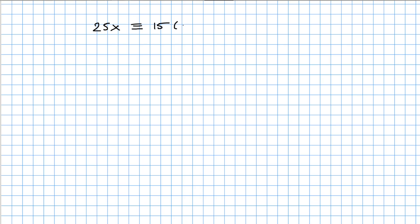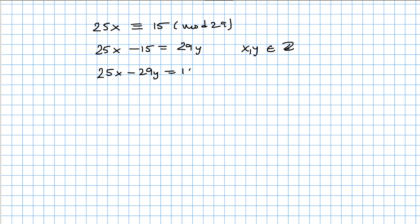In this video, we want to solve 25x ≡ 15 (mod 29). I'm going to rewrite this as 25x minus 15 is going to be a multiple of 29, where x and y are integers. Switching 29y with 15, we get 25x minus 29y equals 15. Note that the GCD of 25 and 29 is 1, therefore the solution exists.